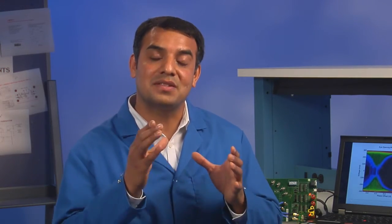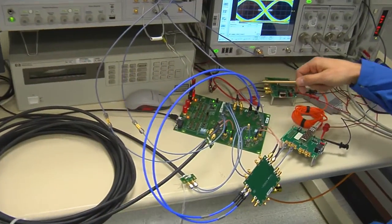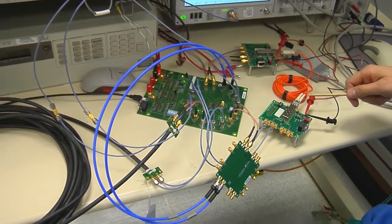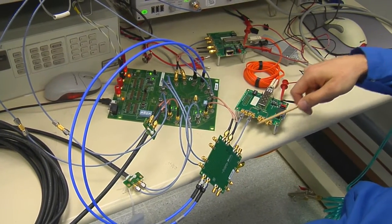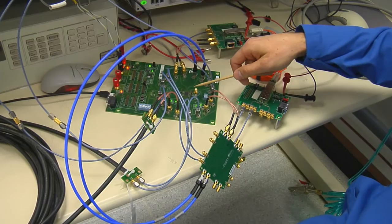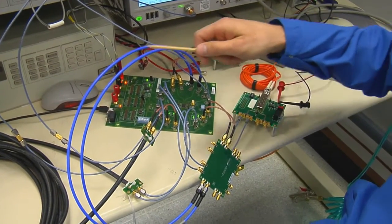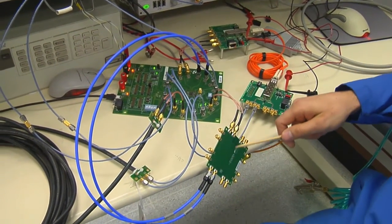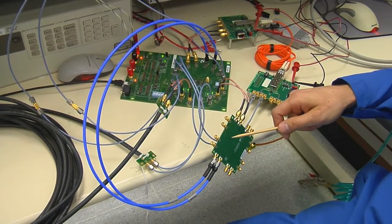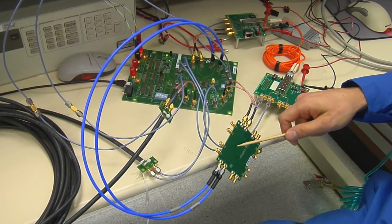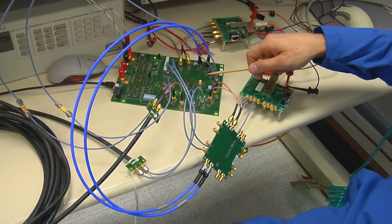To demonstrate the analog performance of these new signal conditioners, here we have the DS110DF410 quad-channel retimer device connected to a variety of different media, including 40 inches of FR4, 10 meters of 30-gauge cable, and an optical fiber link. The data is connected in a daisy-chain format across each channel.